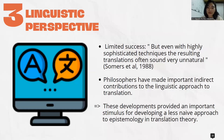This led to the publication of a number of books on transformation that focused primary attention on correspondence in language structure. In addition, the limited success of machine translation — because it requires so much re-editing and post-editing — showed that even with highly sophisticated techniques, the resulting translations often sound very unnatural. Finally, philosophers have made important contributions to the linguistic approach to translation and encouraged the use of common language in communication.